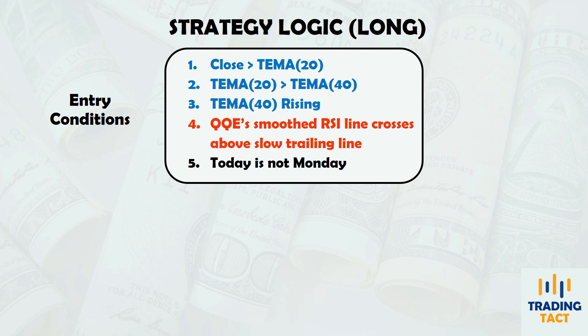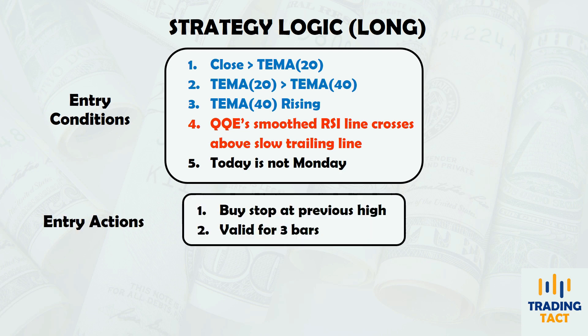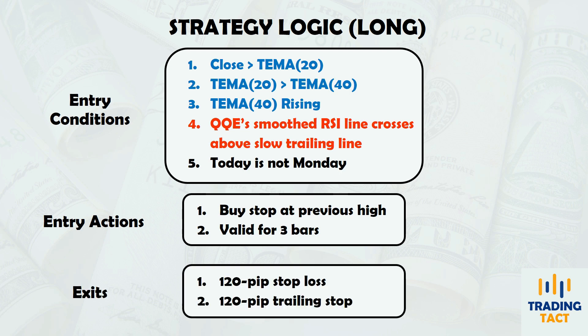If the entry conditions are met, I will place a buy stop at the previous high, which will be valid for 3 bars. For exits, I will use a 120-pip stop loss and trailing stop. I found this simple combination to work well for trend following. Rules are symmetrical on the short side.